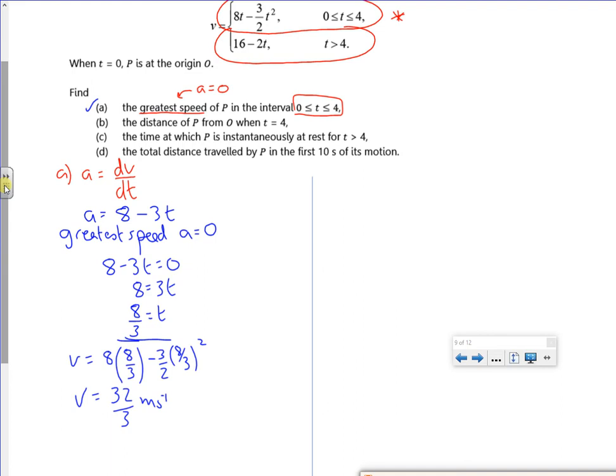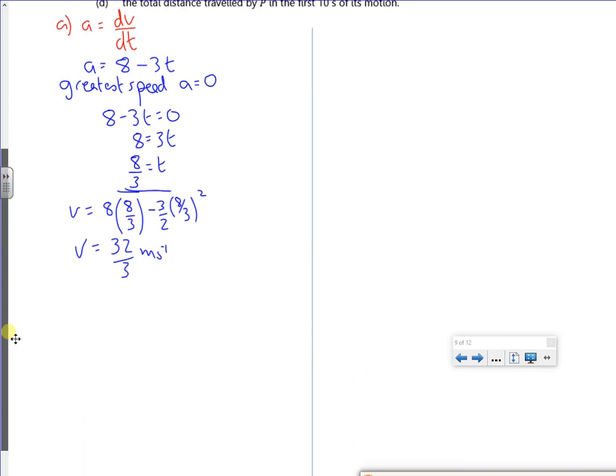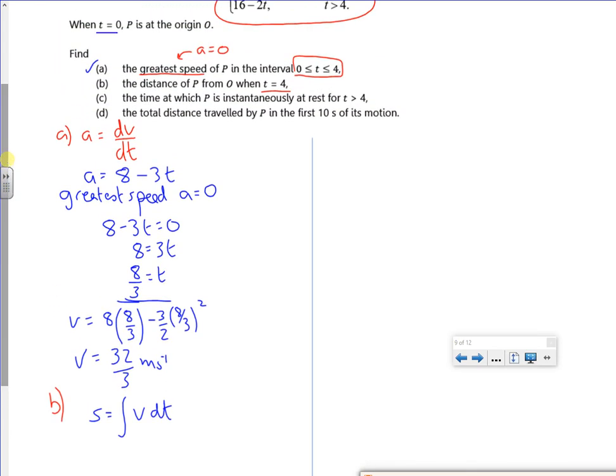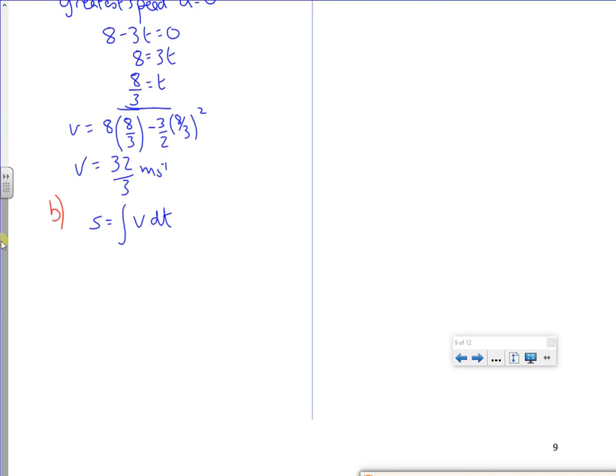Part B, what's the distance? That's going to be integrating the first equation. My distance is integrating my velocity. Now I must look at this here. It tells me when t is zero, s is zero. So let's have a look at this one. I want to integrate my 8t minus 3 over 2 t squared dt.